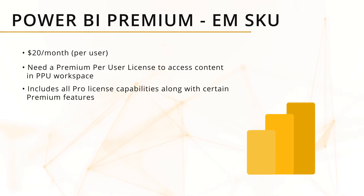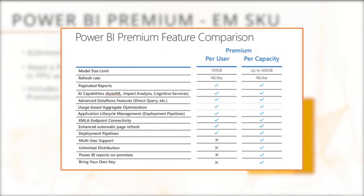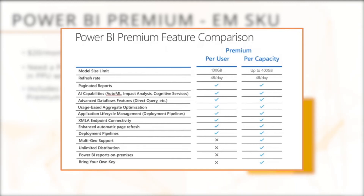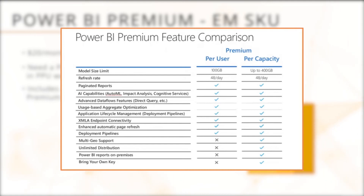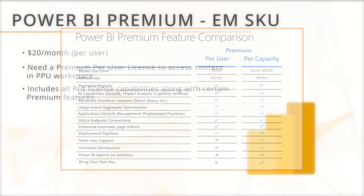Here are the main differences between per capacity and per user. With per user, you still get most of the main premium features: XMLA endpoint connectivity, AI capabilities, paginated reports, increased refresh rates, and deployment pipelines. Some things you don't get with per user are Power BI Report Server on-premises and dedicated capacity. So there are a few differences, but overall you get a lot of the same capabilities as premium capacity licensing.